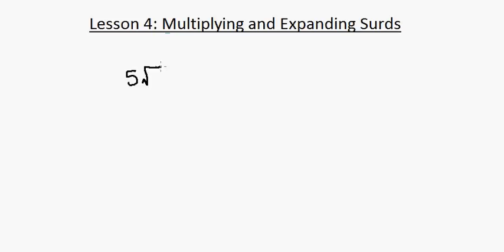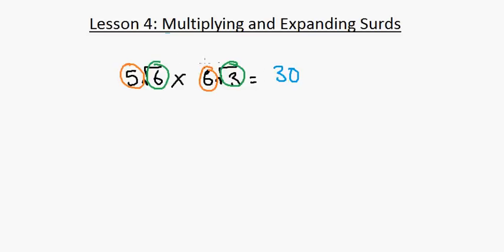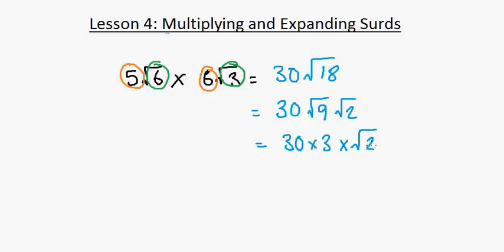Another example: 5 root 6 times 6 root 3. We multiply the integers — 5 times 6 is 30 — and the roots — root 6 times root 3 is root 18. We simplify root 18 as root 9 times root 2, and root 9 is 3, so we get 30 times 3 times root 2, giving a final answer of 90 root 2.